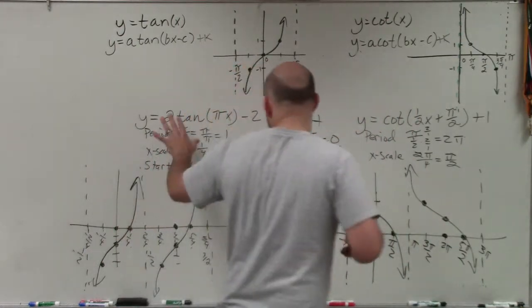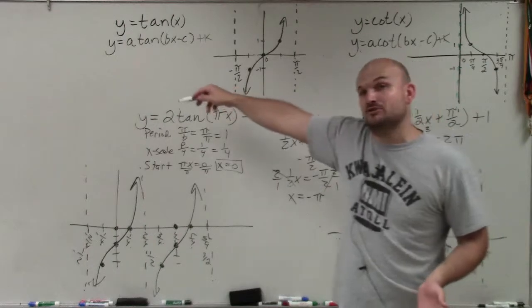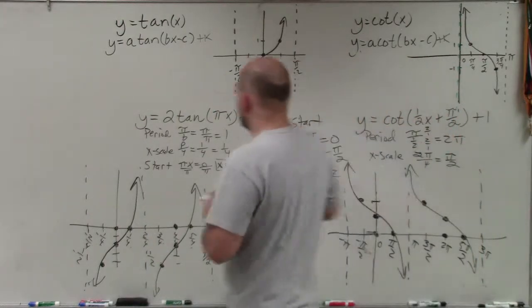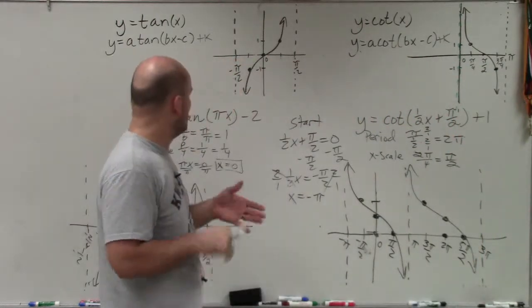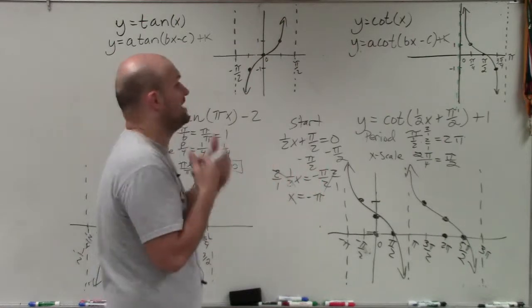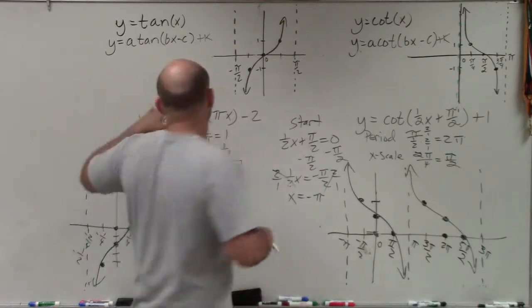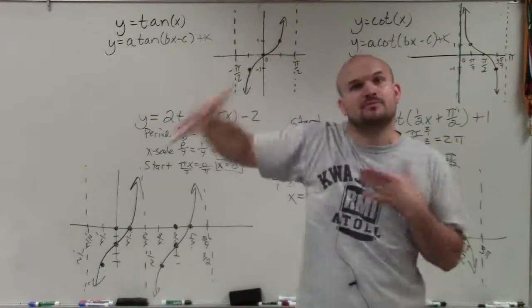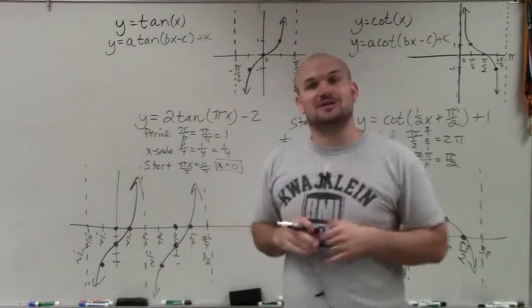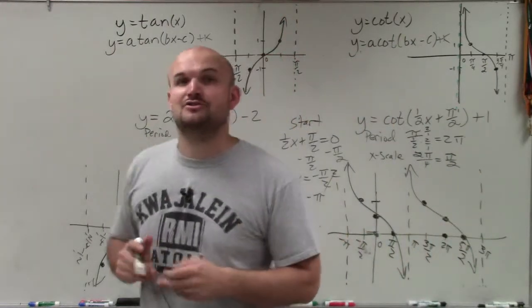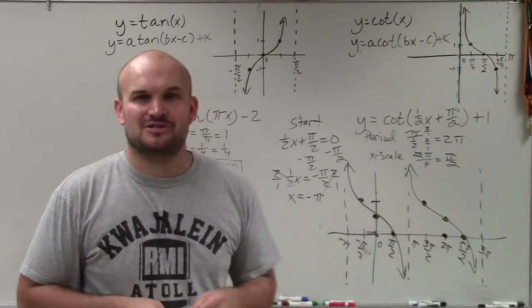So this one had a vertical stretch, because your a was greater than 1. This one did not have a vertical stretch, but we also had a phase shift. We shifted the graph to the left in addition to raising the graph up. Where this one, we stretched it and we changed the period, but we didn't shift it left or right. So there you go, ladies and gentlemen. Those are just two more examples for how to graph the tangent and cotangent functions. Thanks.